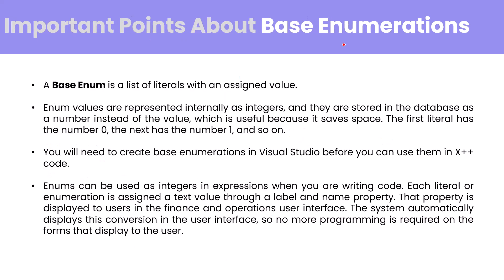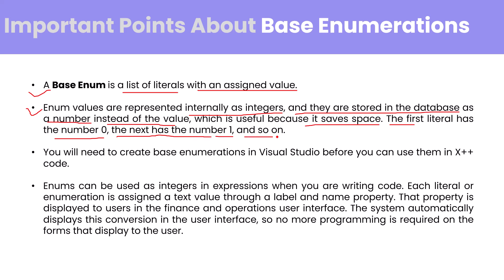So specifically, what is base enum? Base enum is a list of literals with assigned values. These values are actually numerical. Whatever you see in the front end are the string values or labels. Enum values are represented internally as integers and are stored in the database as a number instead of the string value, which is useful because it saves space. The first literal has integer value zero, the next has one, and so on.